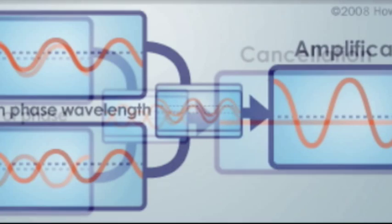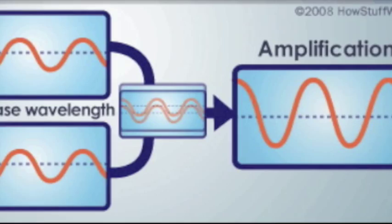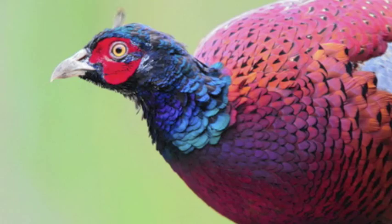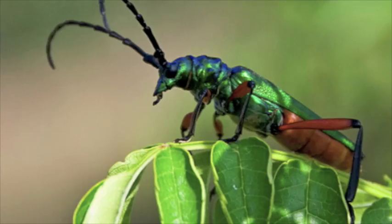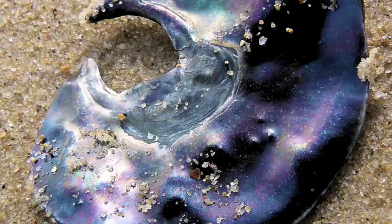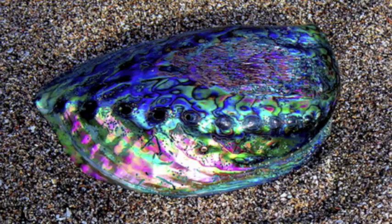However, when the phases of two wavelengths are matched, they will not cancel each other out — instead they'll complement each other. In a process called destructive interference, light moves through the butterfly's wings to create a color change that is called iridescence.